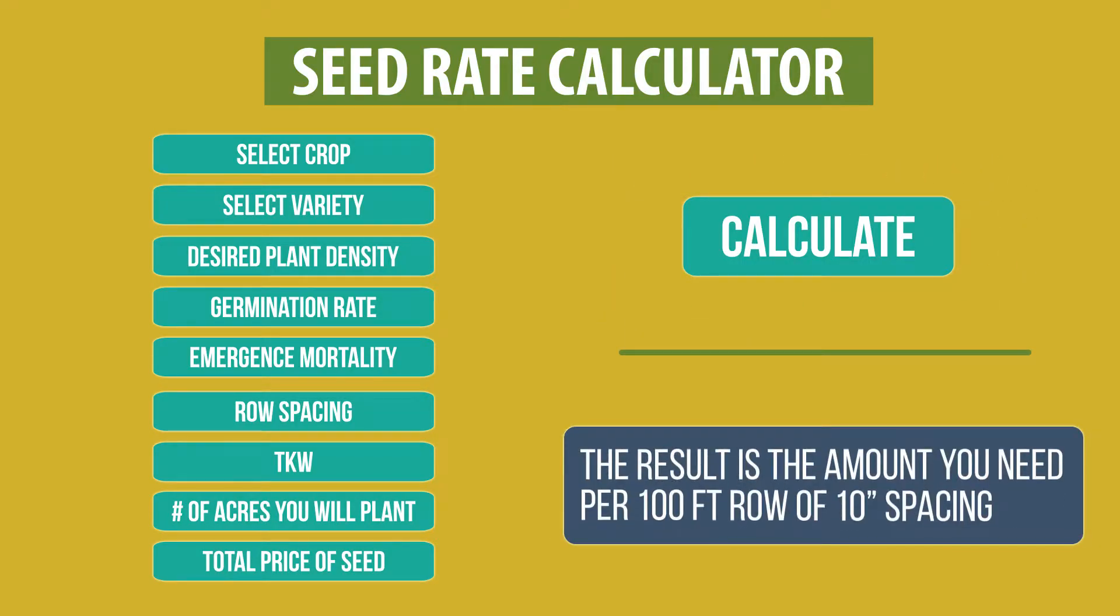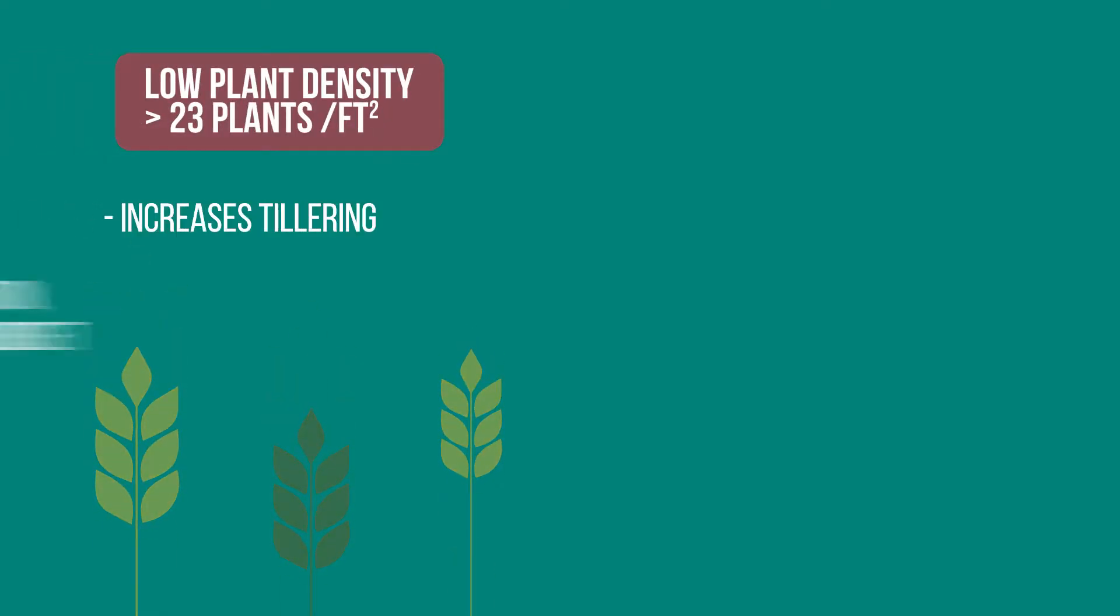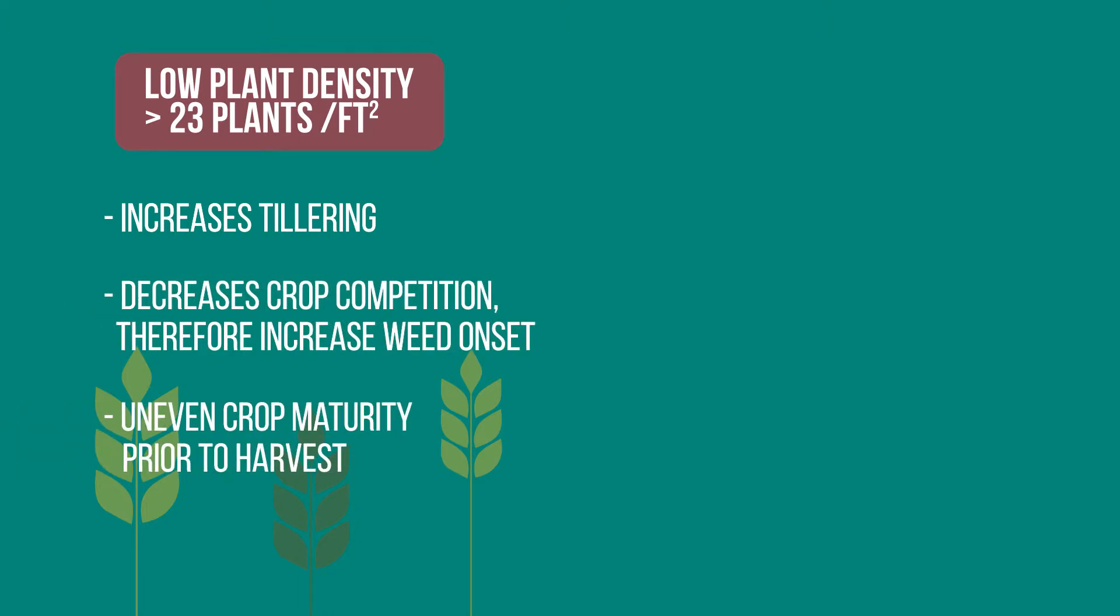It'll generate the amount of seed you need per 100-foot row of 10-inch spacing. Plant density is important to have uniform from one end of the field to the other. You don't want to have thin areas, because thin areas are going to have higher weed populations, which will cost you in the long run.